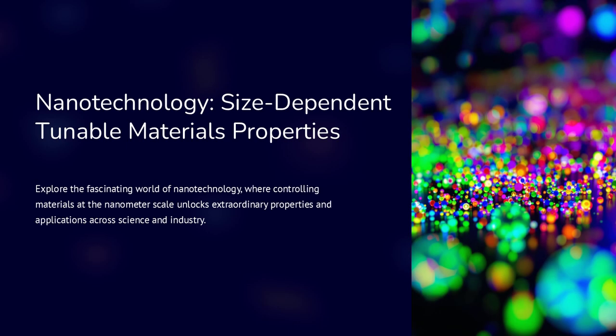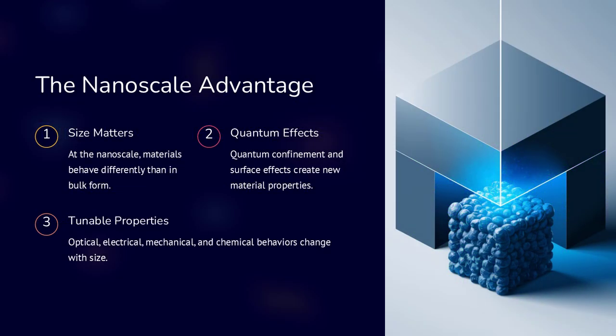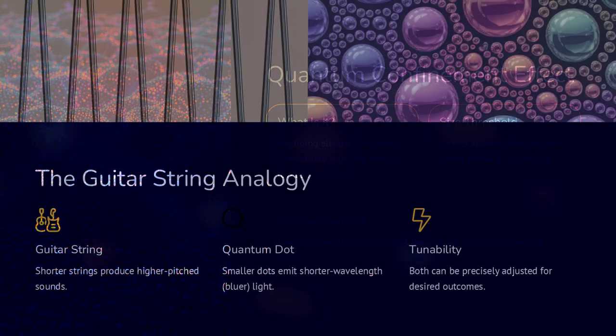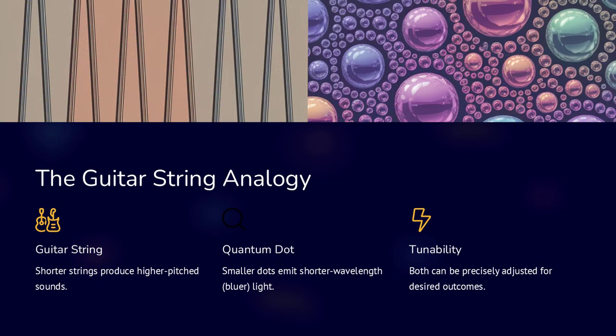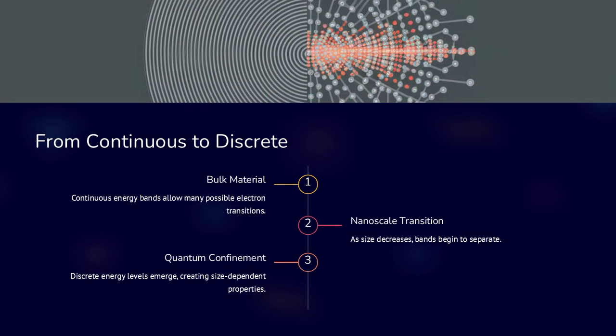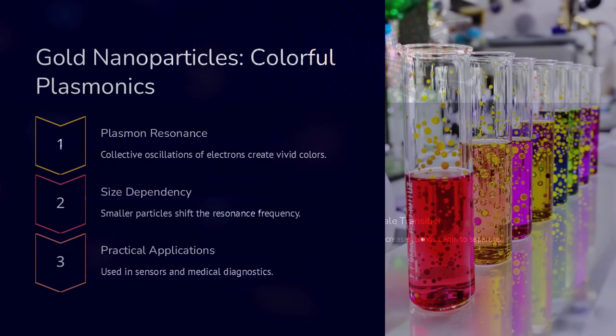Nanotechnology allows us to control and exploit materials at the nanometer scale, where the size of the material can dramatically affect its properties. When materials are reduced to nanometer dimensions, quantum confinement and surface effects come into play, leading to changes in optical, electrical, mechanical, and chemical behavior that are not observed in bulk materials.